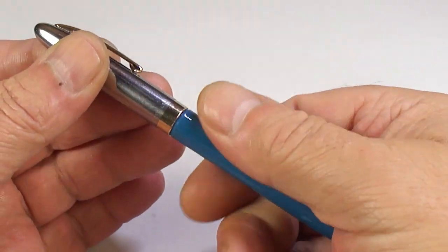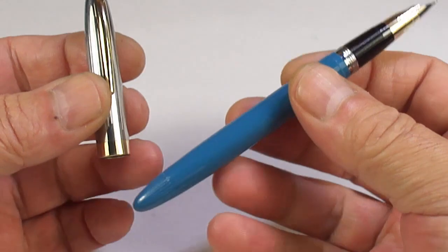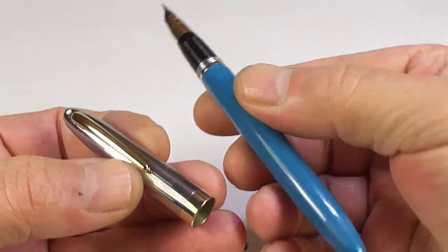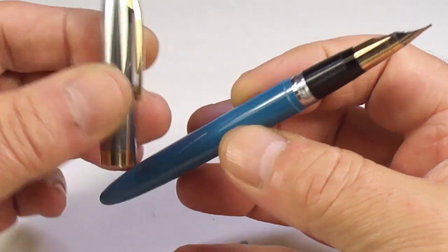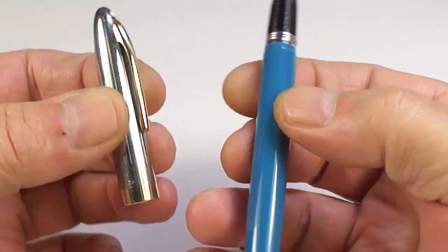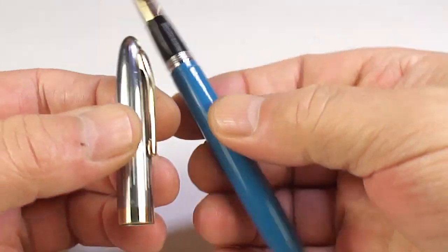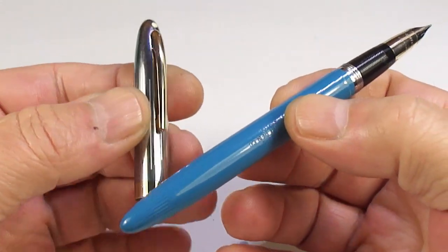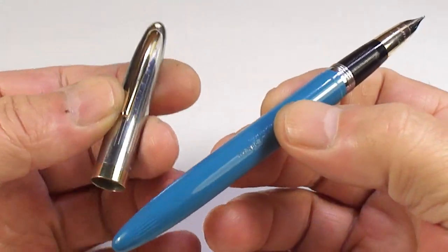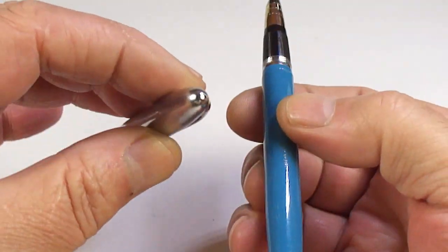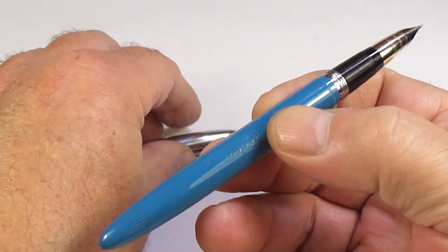Now, let's unscrew the cap for you. Let's show you the pen in different angles. As I say, a lovely example. And this is one of my favorite colors as well. The aqua, or some people call it the pastel blue. But a lovely, lovely pen.